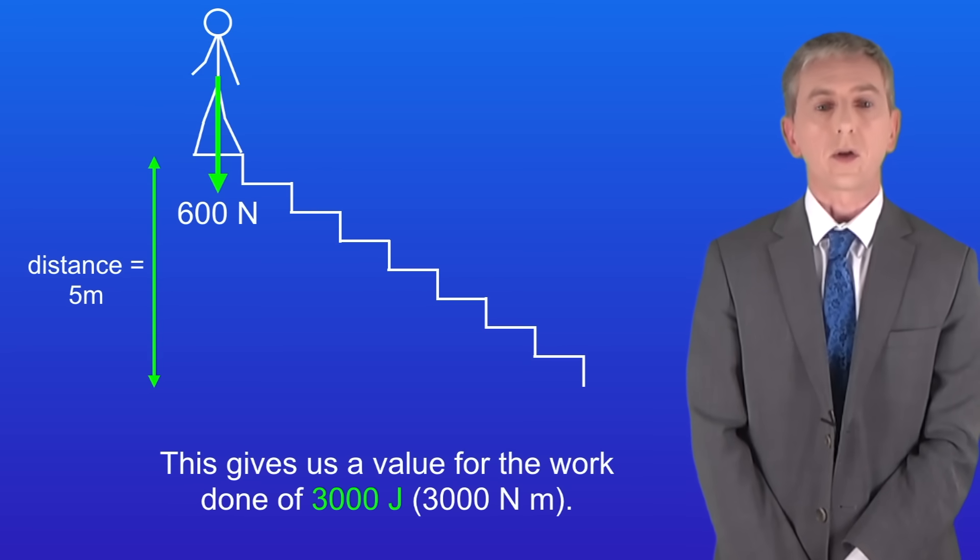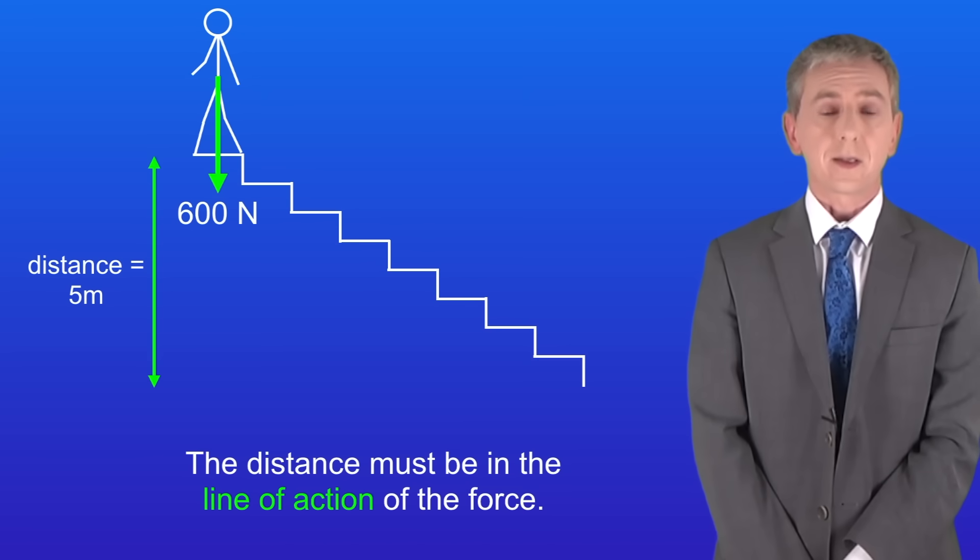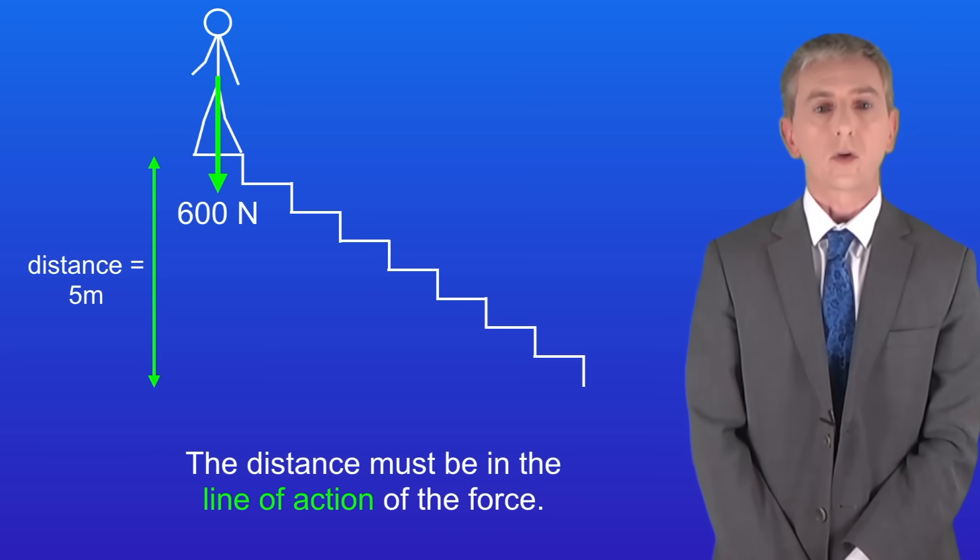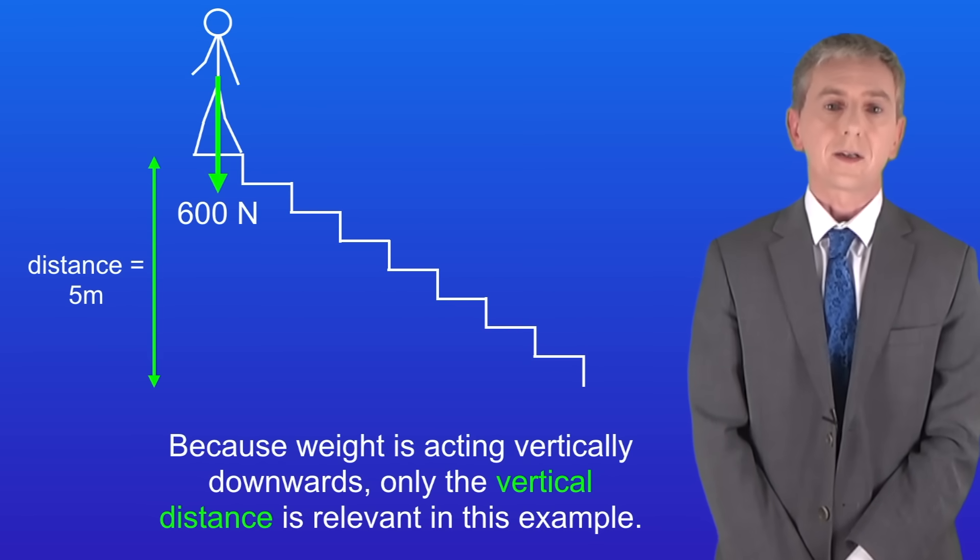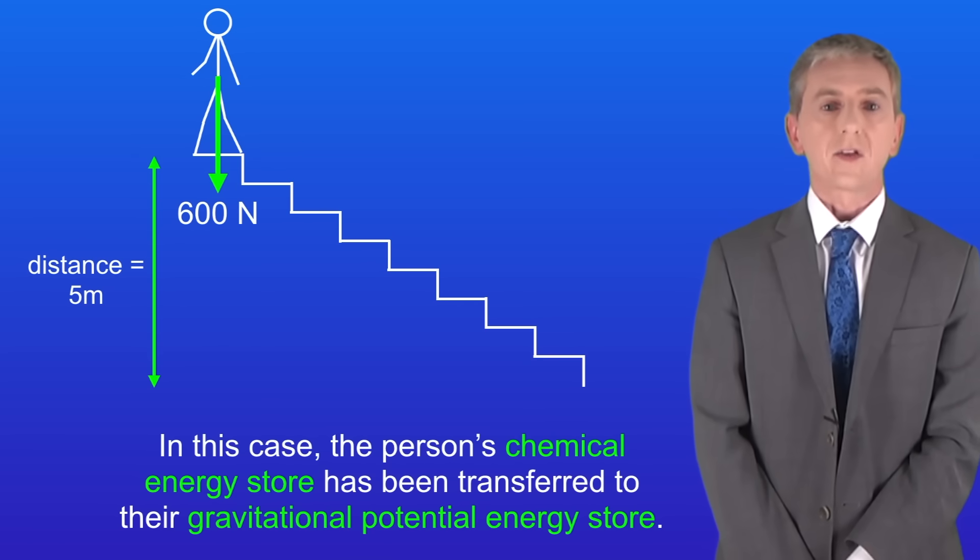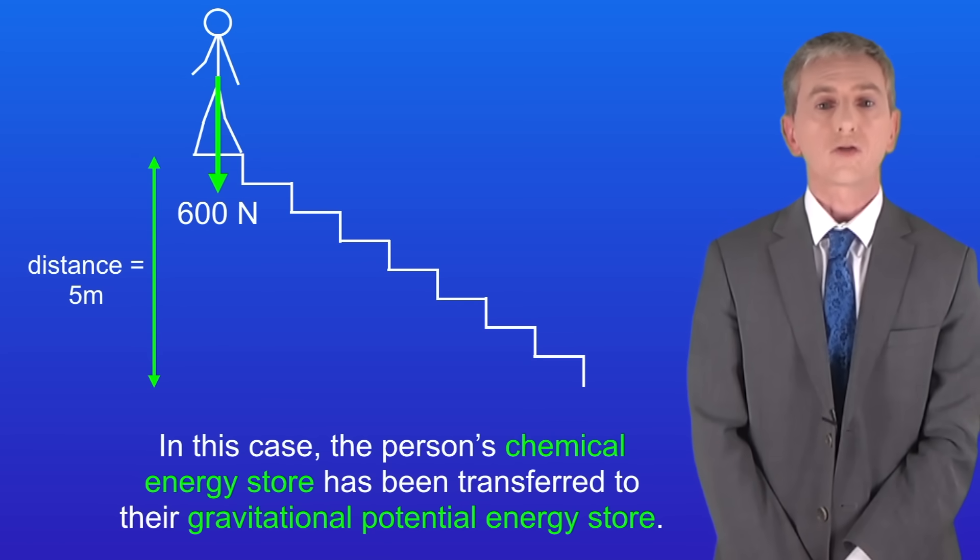Now this brings us to a key point. Remember that the distance must be in the line of action of the force. Because weight is acting vertically downwards, only the vertical distance is relevant in this example. In this case the person's chemical energy store has been transferred to the gravitational potential energy store.